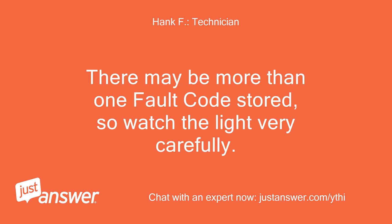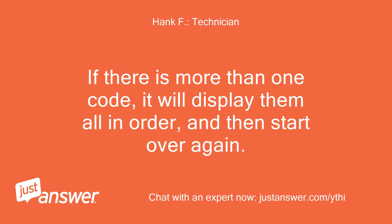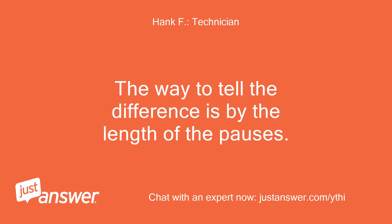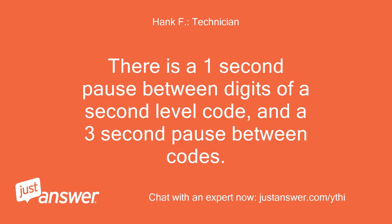There may be more than one fault code stored, so watch the light very carefully. If there is more than one code, it will display them all in order and then start over again. Be very careful not to misread a first-level fault code (single-digit code) as a second-level fault code (double-digit code). The way to tell the difference is by the length of the pauses. There is a 1 second pause between digits of a second-level code and a 3 second pause between codes.